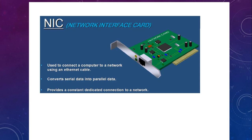Then, what is a network interface card? In our machines — desktops, laptops, switches, routers — every device needs an interface for communication. That interface is called a network interface card. It is used to connect a computer to a network using an Ethernet cable. It converts serial data into parallel data and provides a constant dedicated connection to the network.